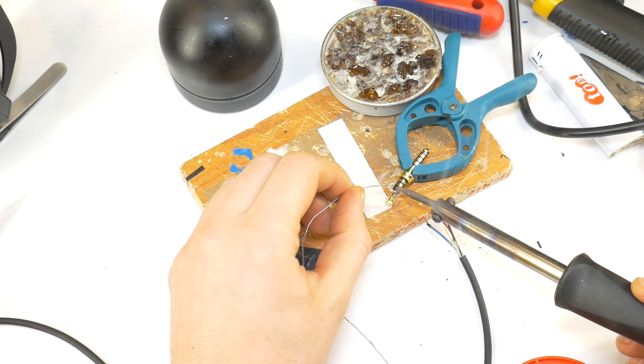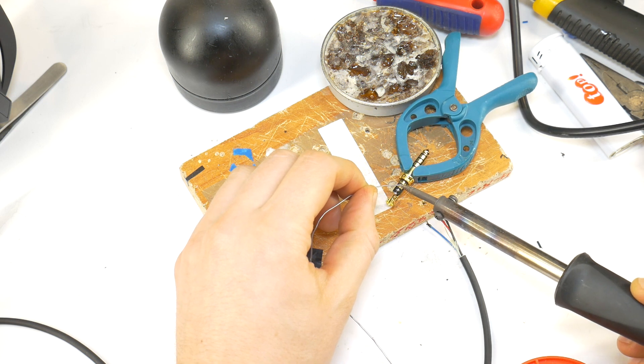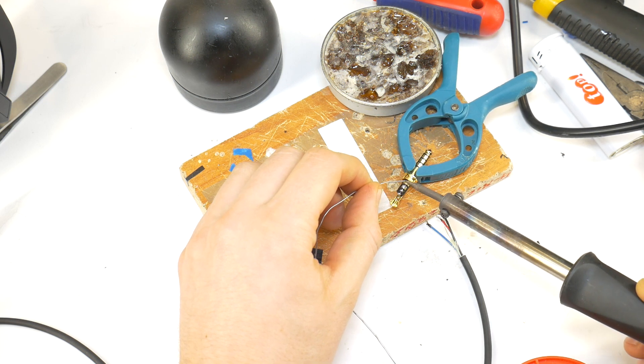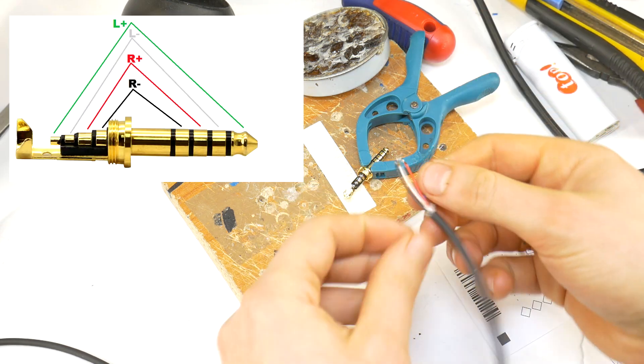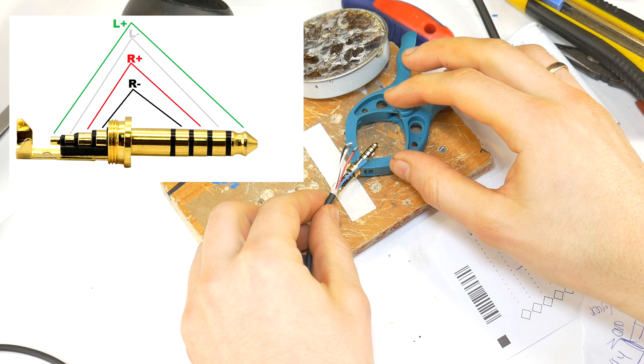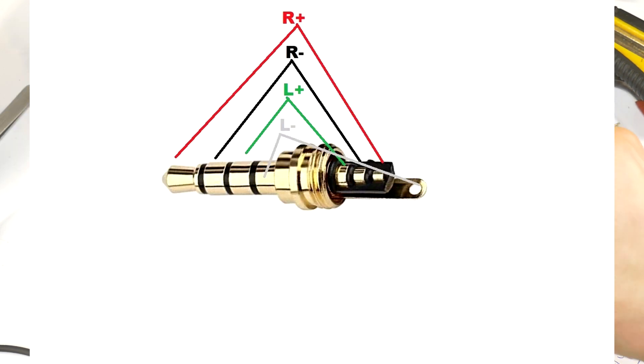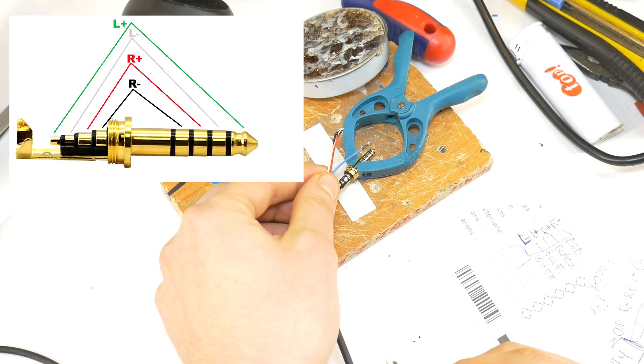Then tin all the jack contacts, which will make it easier to solder and create a more effective contact. Then solder the wires according to the 4.4mm jack balanced connection wiring. If you are using a 2.5mm or 3.5mm 4-pole jack, there is a different wiring, so always check the wiring for the specific jack.